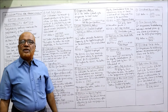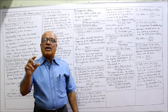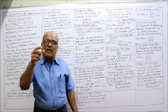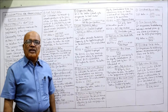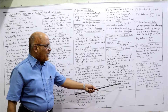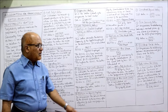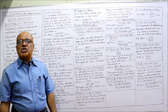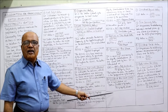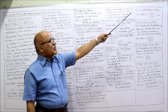Dividend per share (DPS) shows how much dividend each shareholder receives per share. The formula is: dividend on equity share capital divided by number of equity shares. This gives you dividend per share.